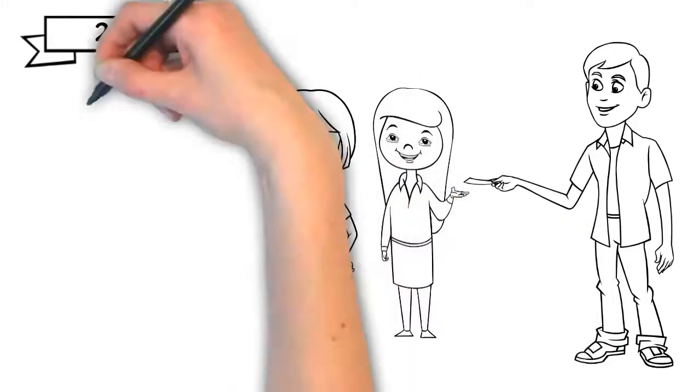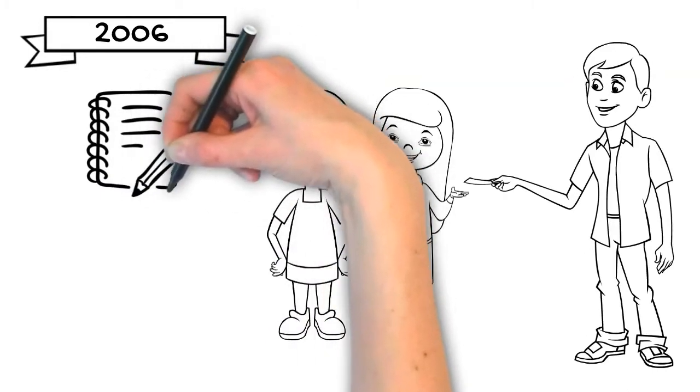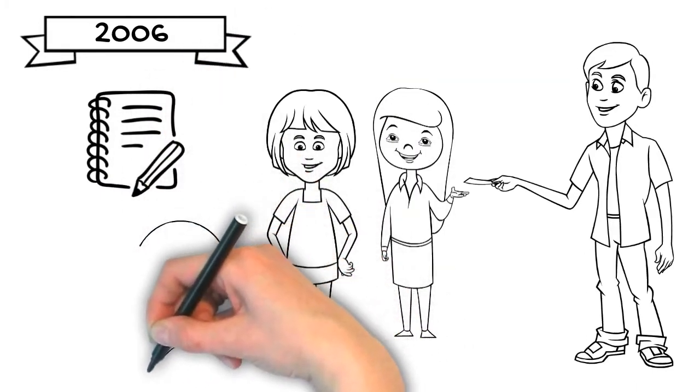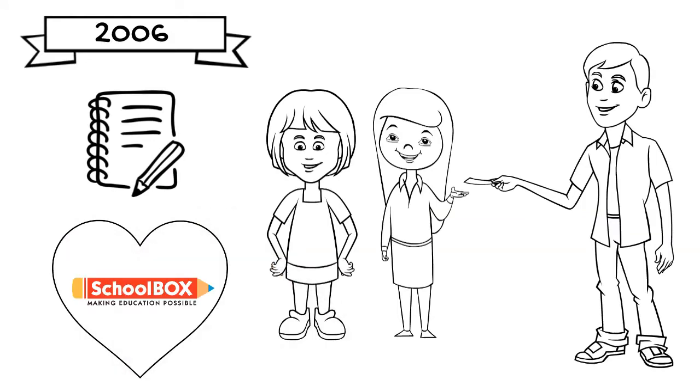now that you have a pencil and a notebook you can go to school. This simple statement profoundly impacted Tom and was the catalyst for the Schoolbox movement which was born in Almonte, Ontario just outside of Ottawa.